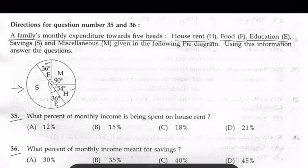The categories are education, savings, and miscellaneous M. Any questions starting around savings? We need to find savings total to 360. From 360, you have to subtract all the other values.